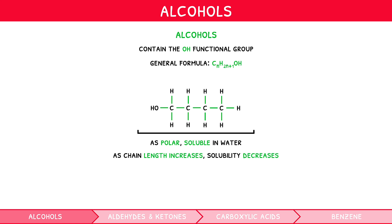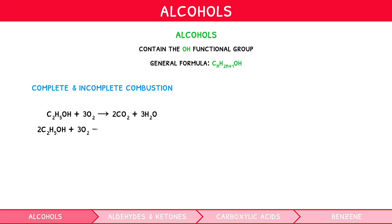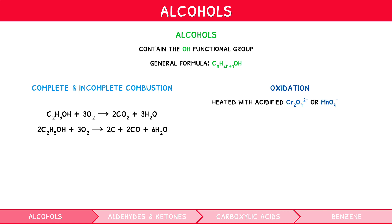There are two main reactions of alcohols you need to know. Like alkanes and alkenes, they undergo complete and incomplete combustion — for example, the equations for ethanol. They also undergo oxidation reactions when heated with acidified potassium dichromate (Cr2O7²⁻) or acidified potassium manganate (MnO4⁻), two oxidising agents. Doing so, they form aldehydes, ketones, and carboxylic acids.